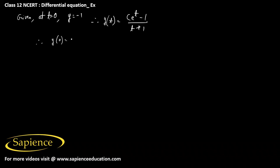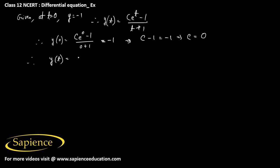So y(0) equals (c·1 minus 1)/1 equals minus 1, which gives c equals 0. Therefore y(t) simply equals minus 1/(1+t). So y(1) equals minus 1/(1+1), which equals minus one half.